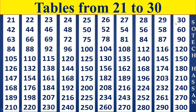30th Table. 30×8 is 240. 30×9 is 270. 30×10 is 300.